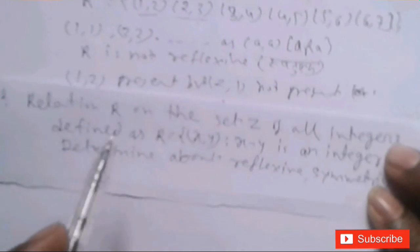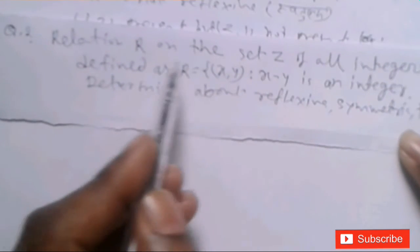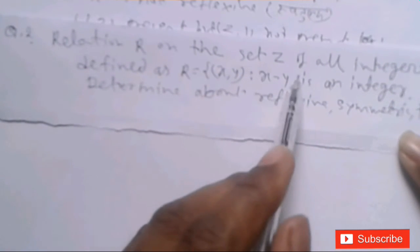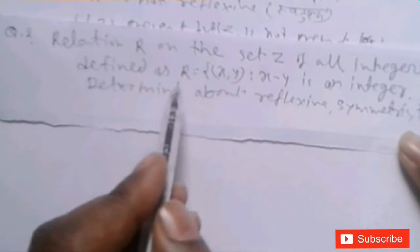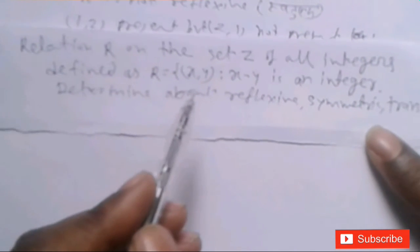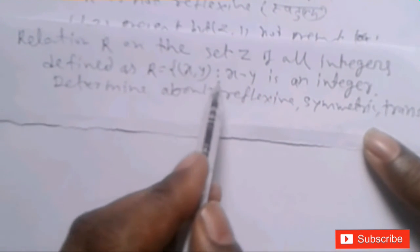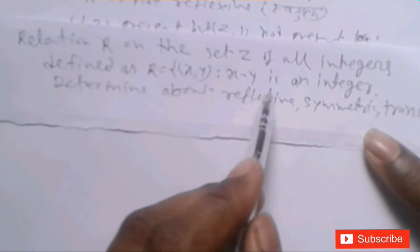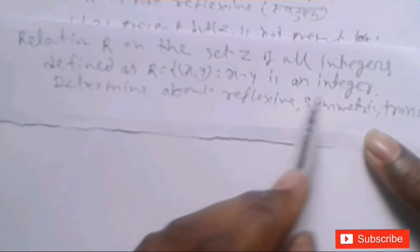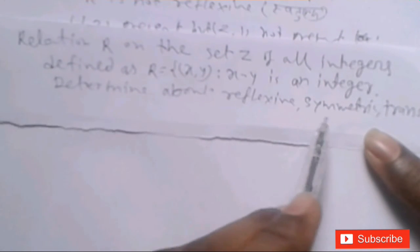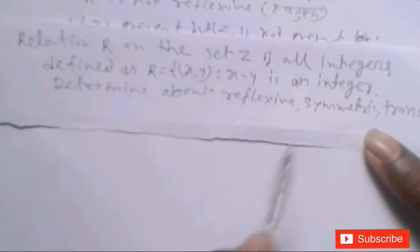Second question: Relation R on the set Z of all integers, defined as R = {(x,y) such that x minus y is an integer}. Determine whether R is reflexive, symmetric, and transitive.